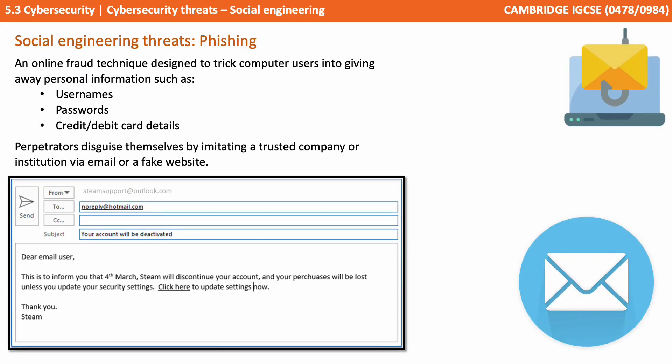Phishing is an online fraud technique designed to trick computer users into giving away personal information, such as username, passwords, and credit card details. Perpetrators disguise themselves by imitating a trusted company or institution via an email or fake website.